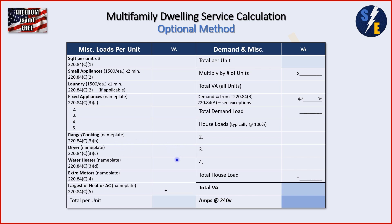So: range nameplate, dryer nameplate, water heater nameplate, any extra motors at nameplate, then take the largest of heating or cooling at nameplate. Add all those values together to get total per-unit VA. Slide that up to the right column, multiply by the number of units, and get total VA for all units. If you have dissimilar units — different sizes or different appliances — you treat each style separately, running each group through the per-unit calculation first.